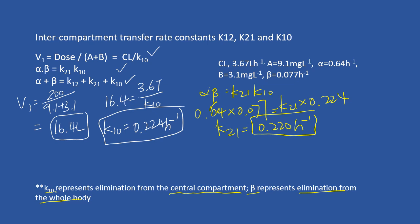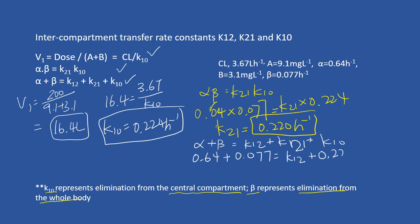For the last rate constant, we calculate k12 using the equation: alpha plus beta equals k12 plus k21 plus k10. Putting in all the values, k12 will be 0.273. So that's all for the inter-compartment transfer rate constants.